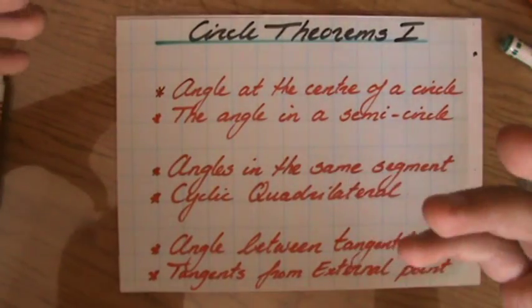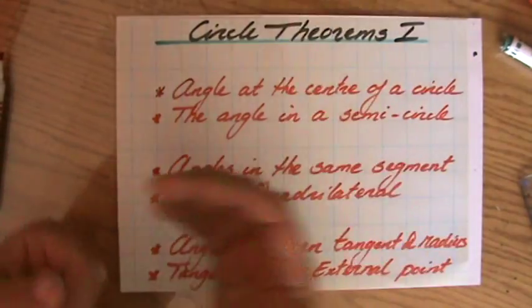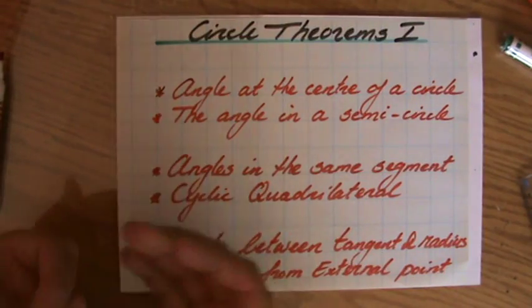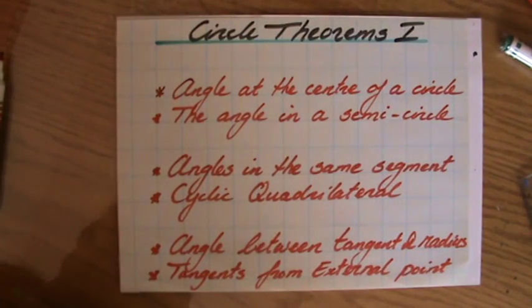So we've spoken about angles at the center of the circle, we've spoken about angles in the same segment, cyclic quadrilaterals, and I promise I will just very briefly talk about some tangents and circles.